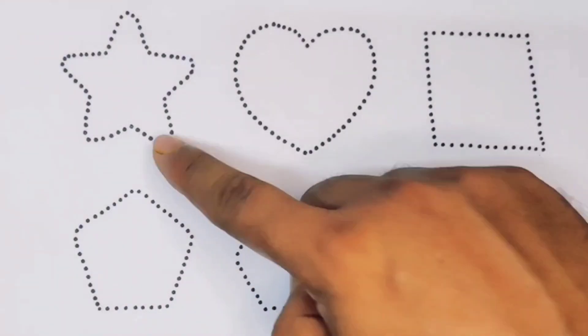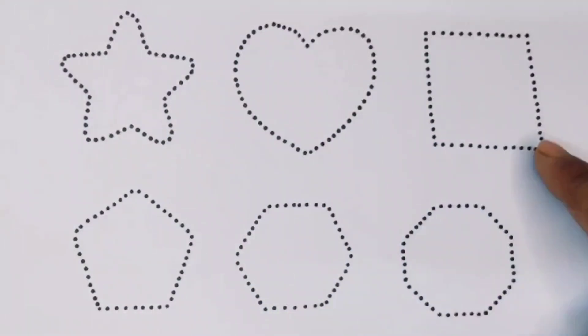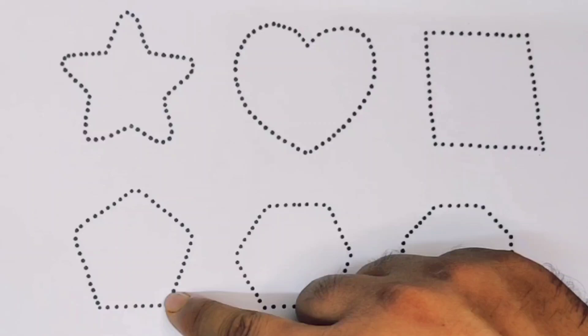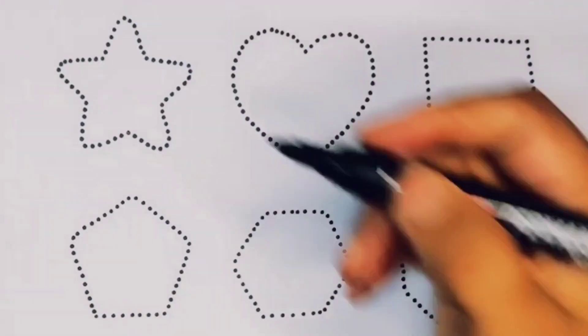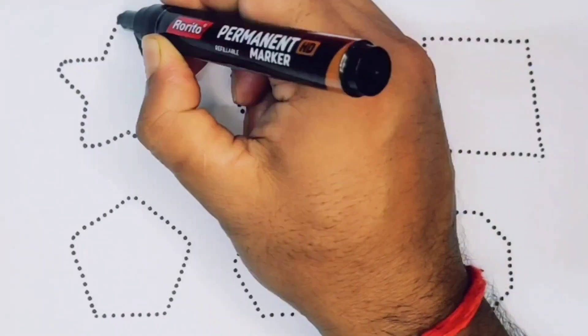Star, heart, parallelogram, triangle, hexagon, and decagon. First we're going to draw the shapes. Star.